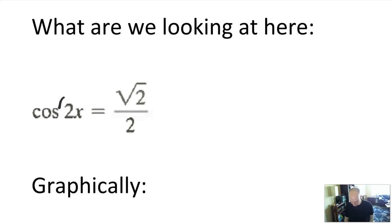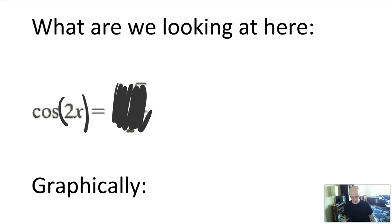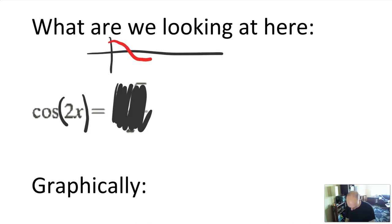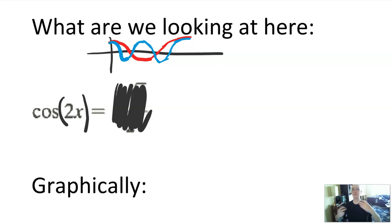Before I do, I want you to think about — ignore the root 2 over 2 part — what is cosine 2x? Well, cosine of 2x is a normal cosine graph sped up. That is, you're looking at a cosine graph that oscillates twice as fast. So if we're looking for solutions, we're going to have more solutions in the same interval.